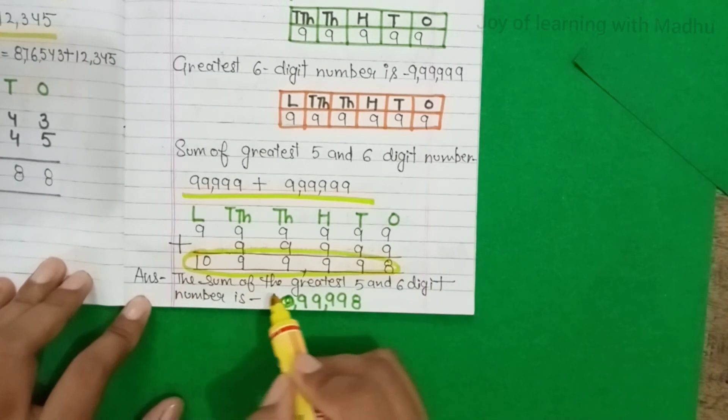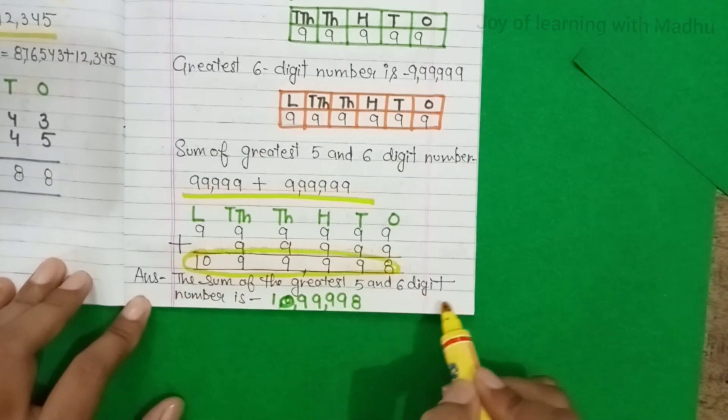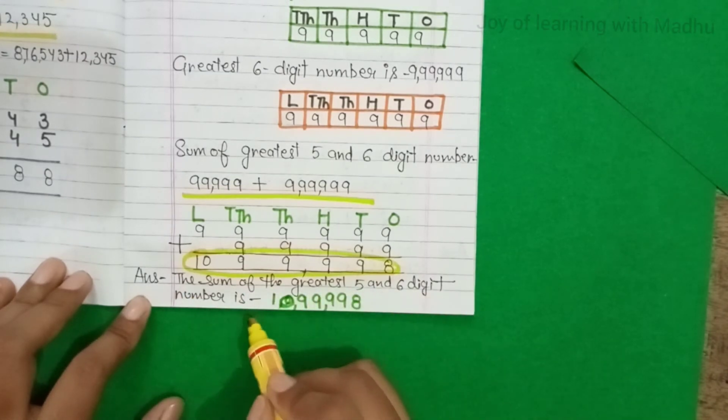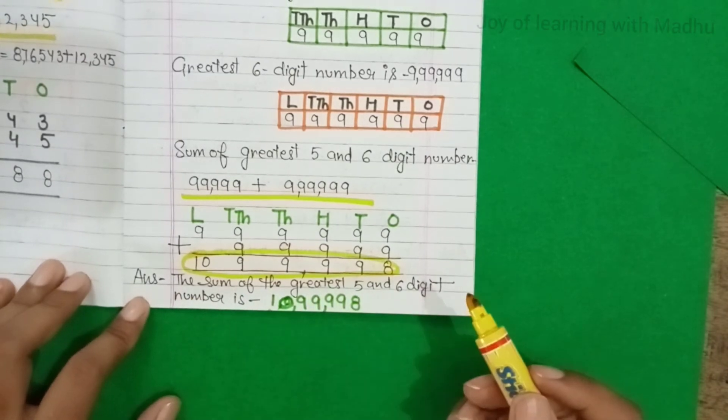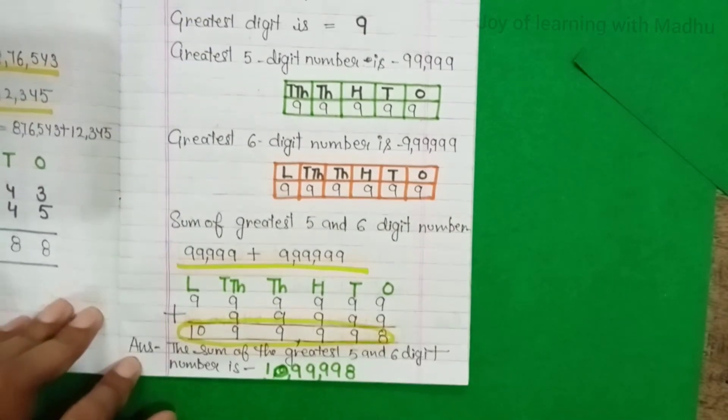And the answer is: the sum of the greatest 5 and 6 digit number is 10,99,998. Come to the next.